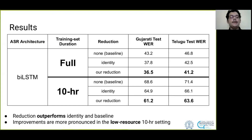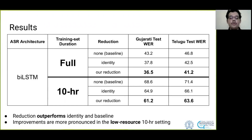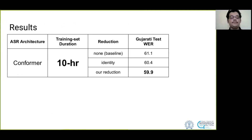In our results, we can see that the reduction outperforms the identity baseline, and improvements are more pronounced in the lower-resource 10-hour setting. The conformer also shows similar trends.